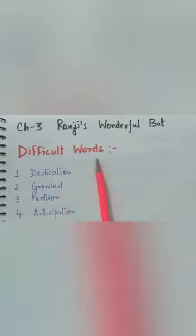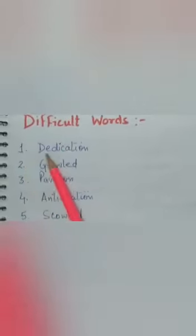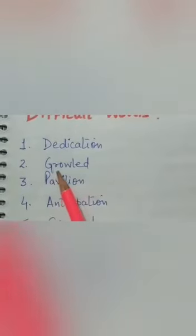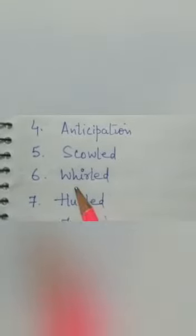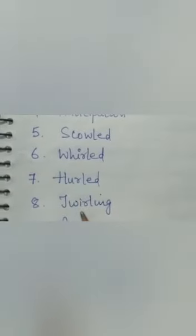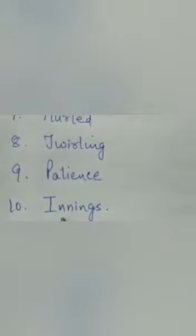Children, here we go with the difficult words of the chapter. You can see on your screens. First one is dedication, second is growled, third is pavilion, then anticipation, scowled, wurled, hurled, twirling, then we have patience, and the last one is innings.